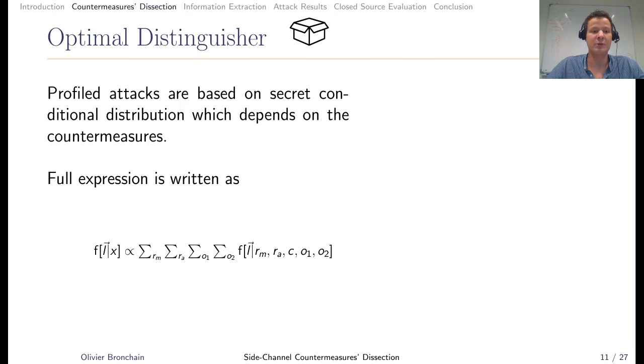Because we know all the countermeasures, we can write what we call optimal distinguisher. This optimal attack is based on a conditional distribution that depends on the countermeasures. In this precise case, the expression is a sum which goes over all possible multiplicative masks, all possible additive masks, and all possible permutations. Each of the terms is one template.